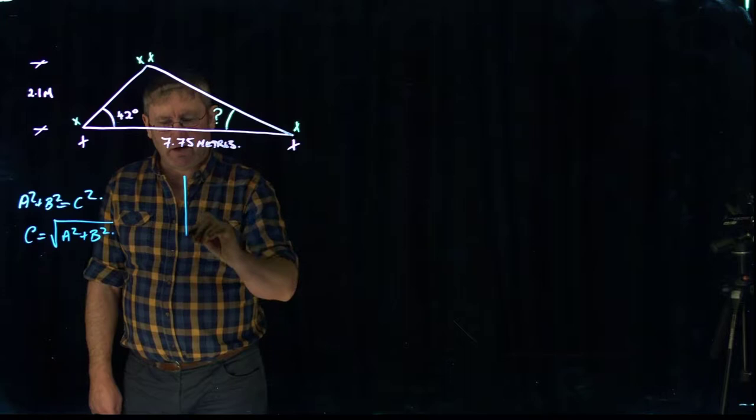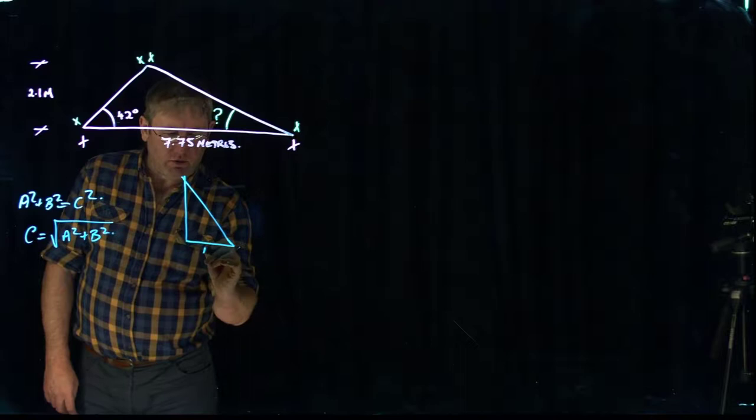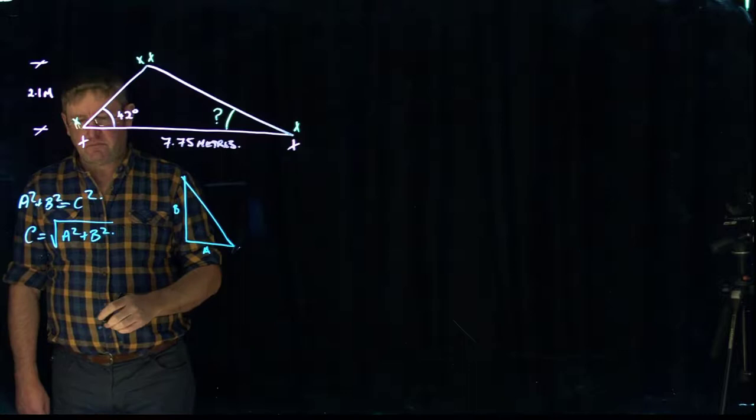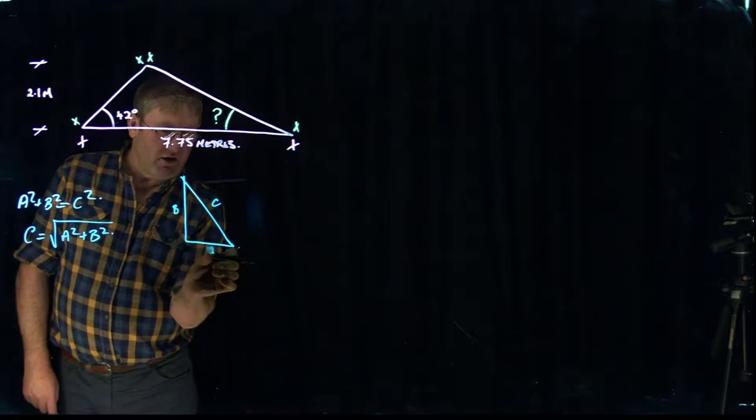So if we have two short lengths, if we have a right angle triangle, and we call this side A and this side B, and we have the information for those, we can determine what this side on here is. And if we have C in this case, and we don't have the A.